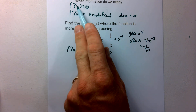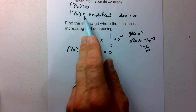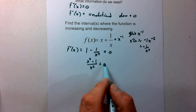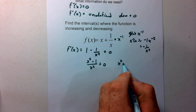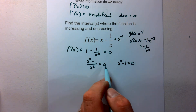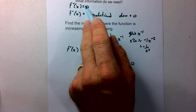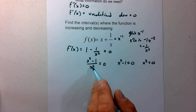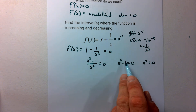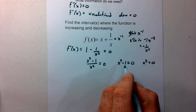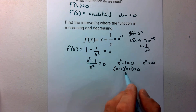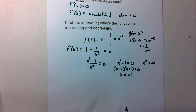To find my critical values, I'm going to find when the first derivative equals zero and where it's undefined. Setting the numerator equal to zero and the denominator equal to zero separately: the numerator x squared minus 1 equals zero gives me x equals plus or minus 1 by factoring or the square root method. Taking the square root of the denominator x squared equals zero gives x equals 0.